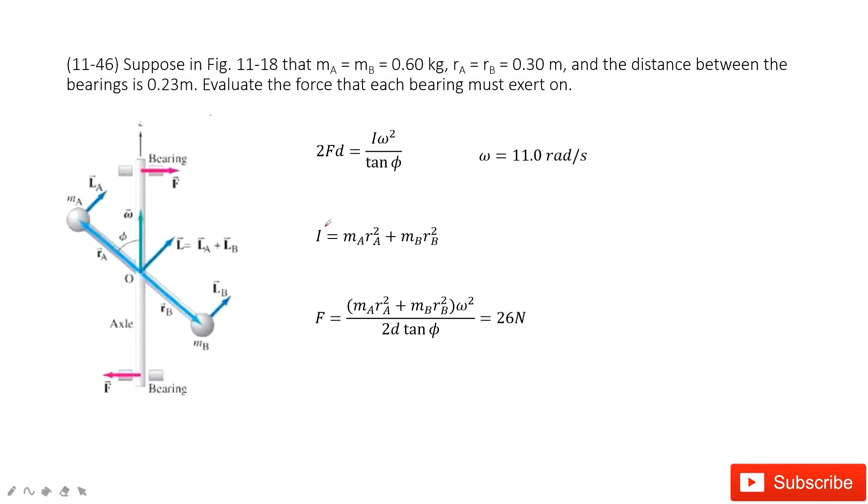So now the first thing we can get is omega. In previous examples, omega is 11 rad per second.